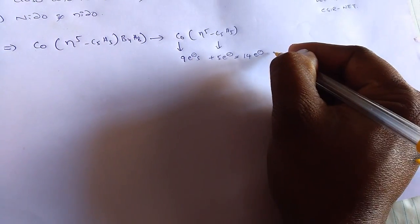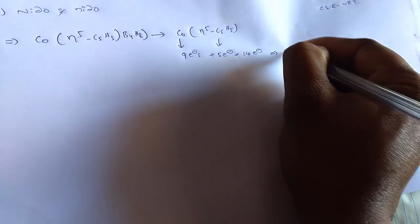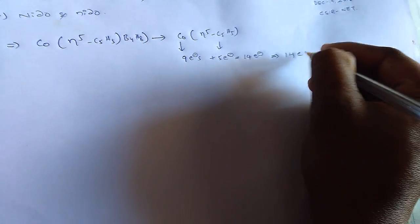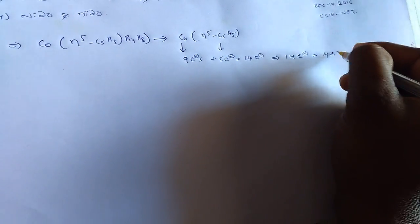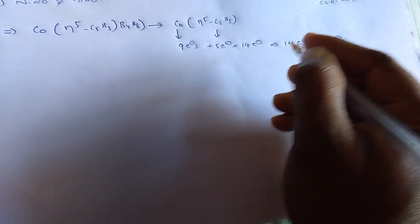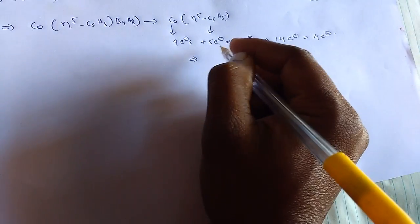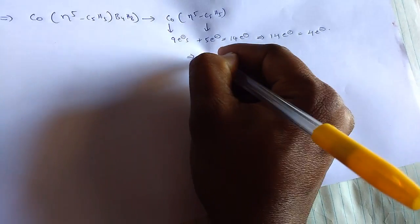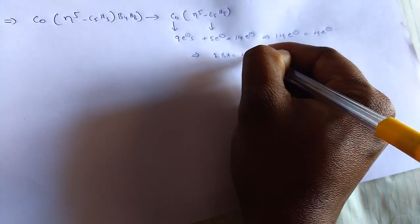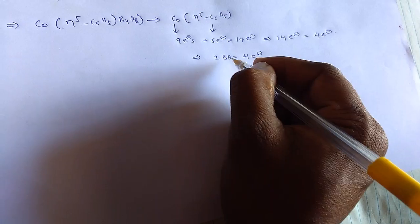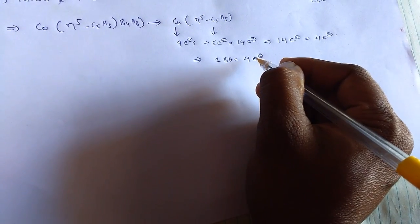We know that in isolobal energy, 14 electrons equals to 4 electrons. From this, we know that 1 BH unit equals to 4 electrons. That means boron hydrogen has valence electrons 4.